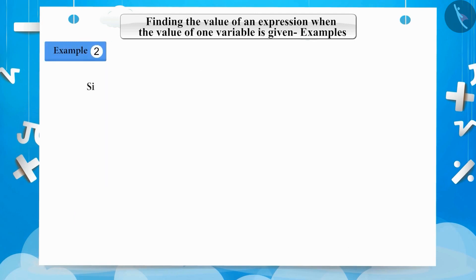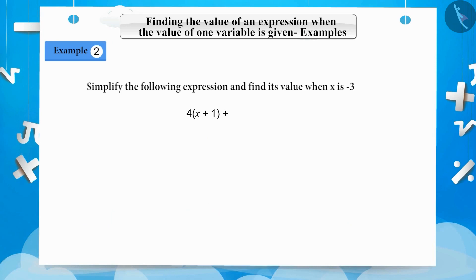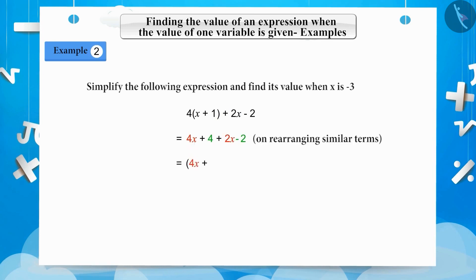Example 2. Simplify the following expression and find its value when the value of x is minus 3: 4x plus 1 plus 2x minus 2. By simplifying this expression we get 4x plus 4 plus 2x minus 2. By rearranging similar terms we get 4x plus 2x plus 4 minus 2. By solving similar terms we get 6x plus 2.